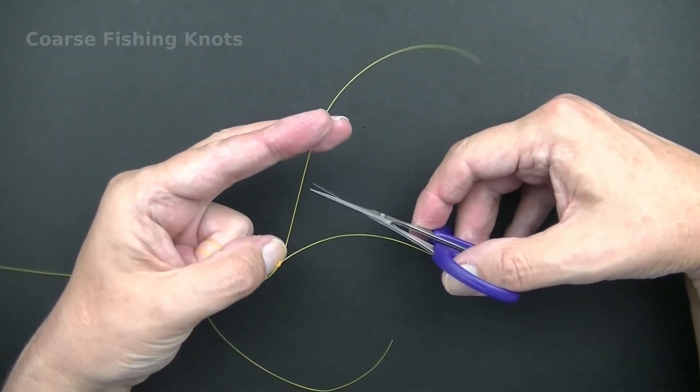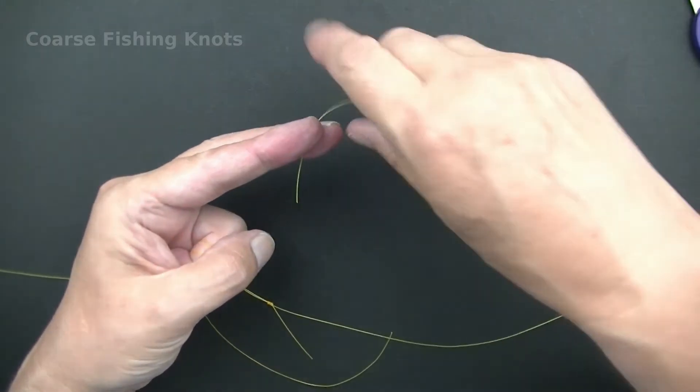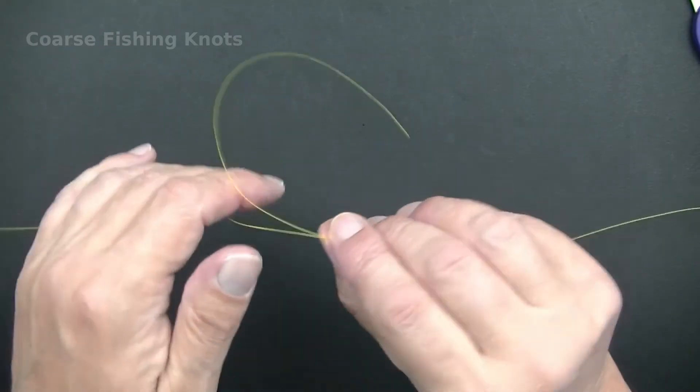Cut the tail ends long leaving at least 2 inches of line which will help the knot to pass through the rod rings while casting.